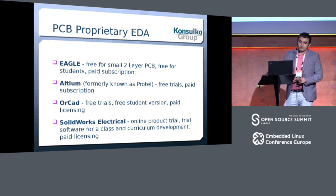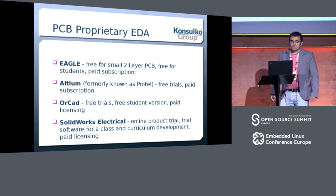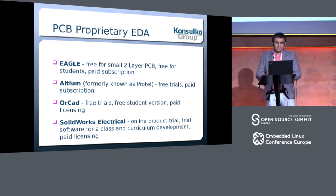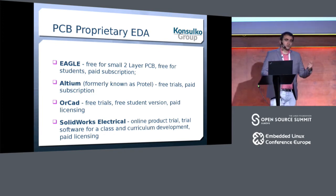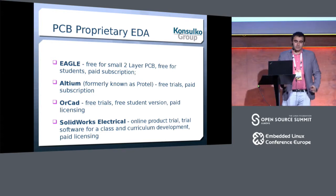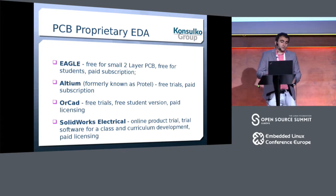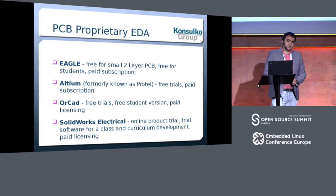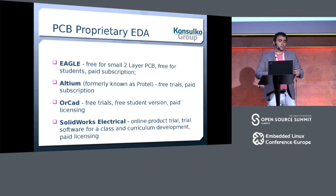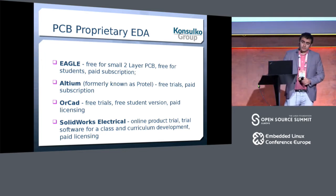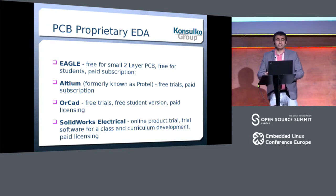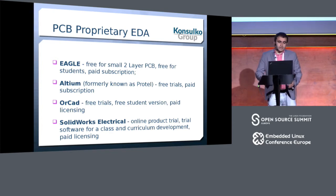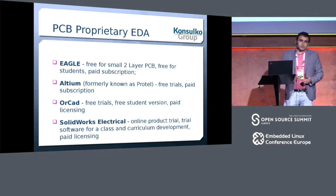Let's look at some of the options for software to make printed circuit boards. Eagle is probably one of the most popular among hobbyists — it's not open source, but it has a free license for small two-layer PCBs with size limitations, and is free for students, though it has a paid subscription and was recently bought by Adobe. Altium, formerly known as Protel, is what a hardware engineer would recommend, but the problem is it's a very expensive tool. Other popular tools such as ORCAD or SolidWorks Electrical also require high fees.